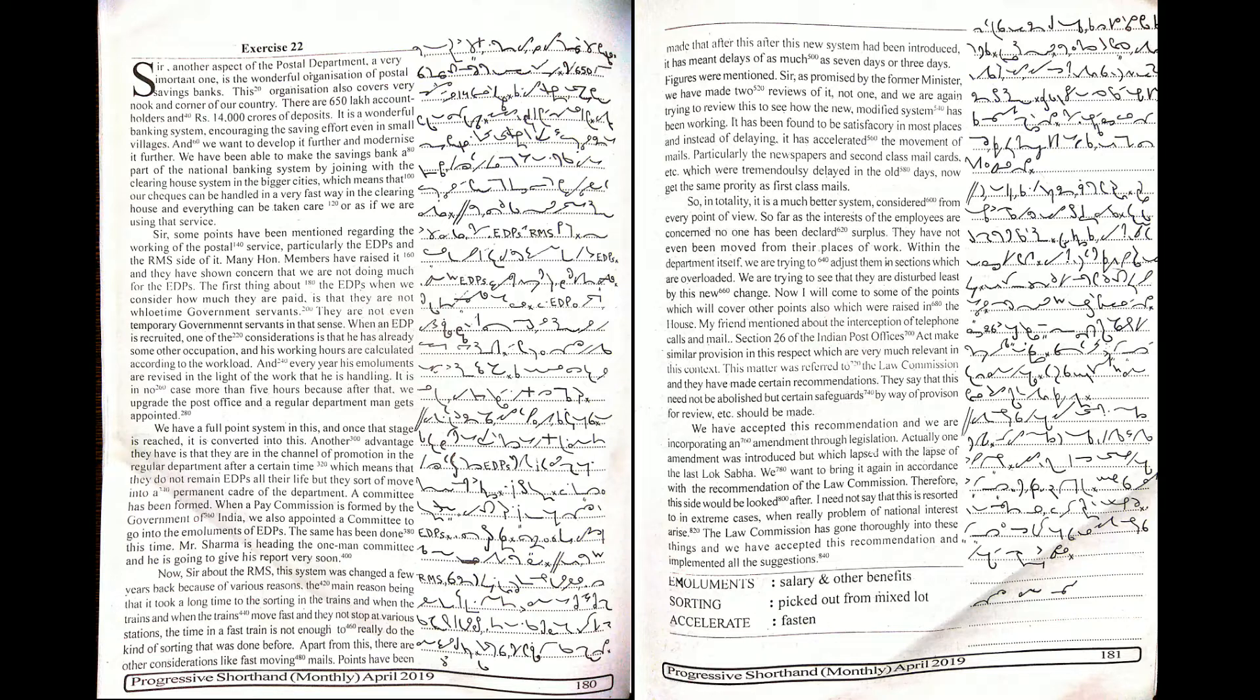Now, I will come to some of the points which will cover other points also which were raised in the house. My friend mentioned about the interception of telephone calls and mail. Section 26 of the Indian Post Office Act makes similar provisions in this respect which are very much relevant in this context. This matter was referred by the Law Commission and they have made certain recommendations. They say that this need not be abolished but certain safeguards by way of provision for review, etc., should be made.